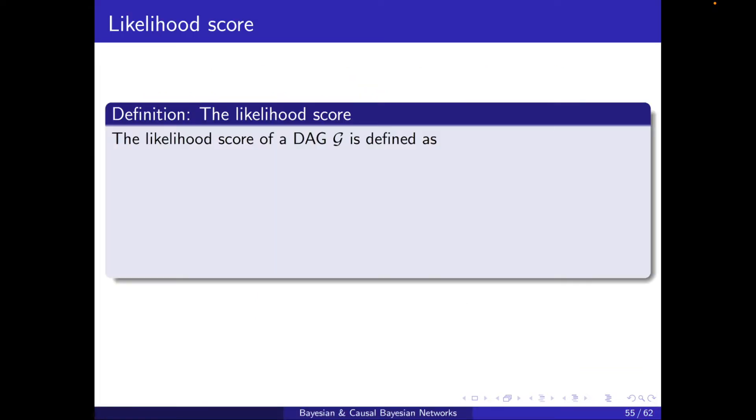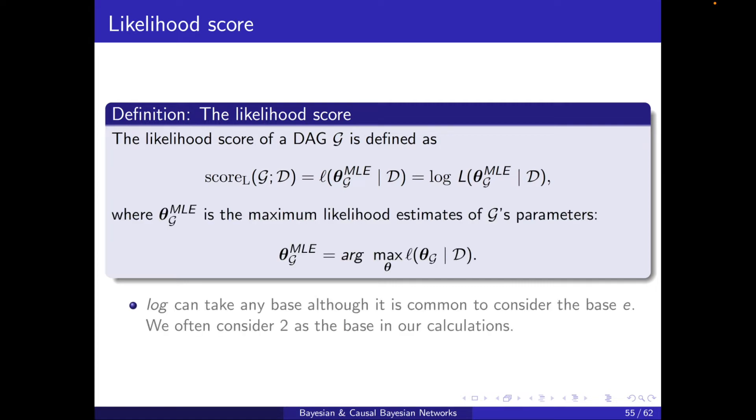Well, one is the likelihood score, and it's defined as follows. The likelihood score of a DAG is the log of the likelihood when we use the MLE parameters for the DAG. So it's basically the log of the probability of the data conditioned on the maximum likelihood estimates of the parameters of that DAG.